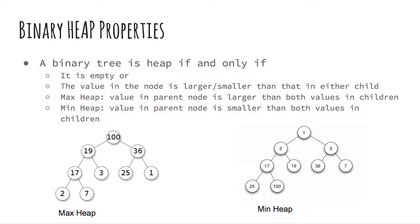There are two types of heaps, max heap and min heap. For a max heap, each key in every parent node is larger than both keys in its children. In the min heap, each key in every parent node is smaller than both its children.